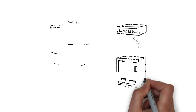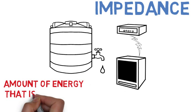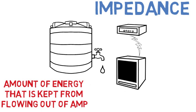The same is true of impedance. Impedance is a measure of the amount of energy that is kept, impeded, from flowing out of your amp. A speaker with high impedance is like a small spigot, because less energy can flow.